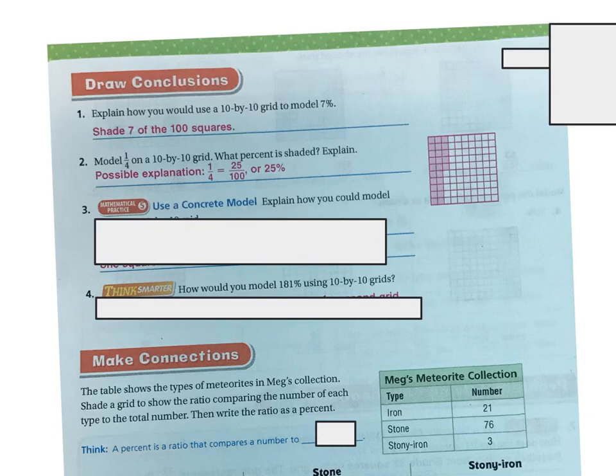So as you can see over here, I've shaded 25 squares out of the 100 to represent the 25%. You can also think about it as quarters, right? A quarter of 100 or a quarter of a dollar bill.